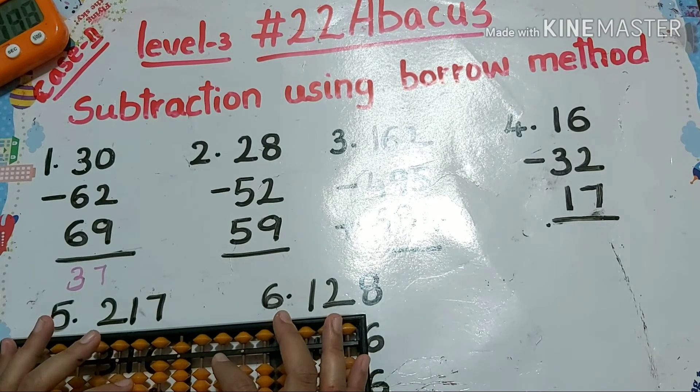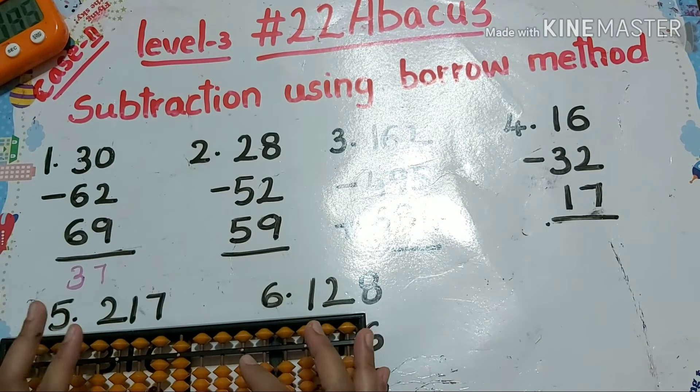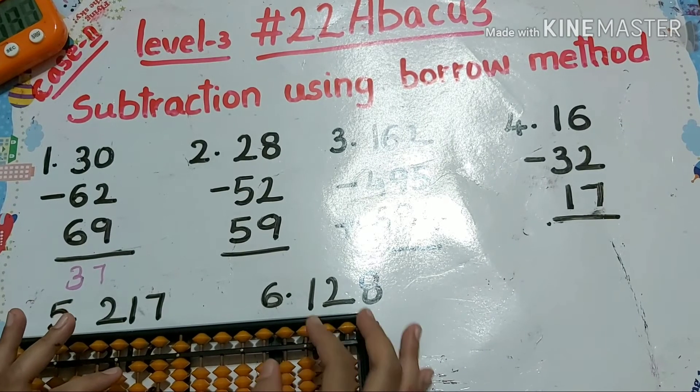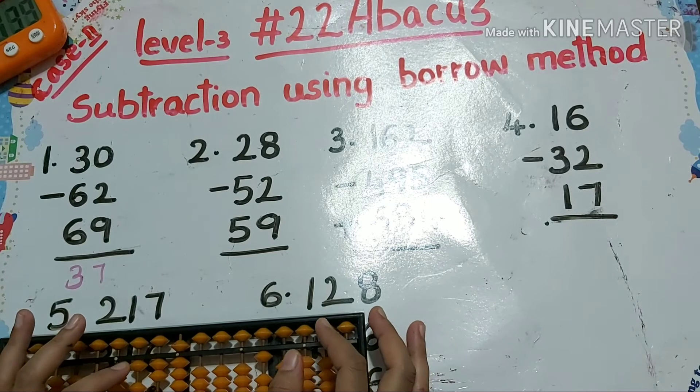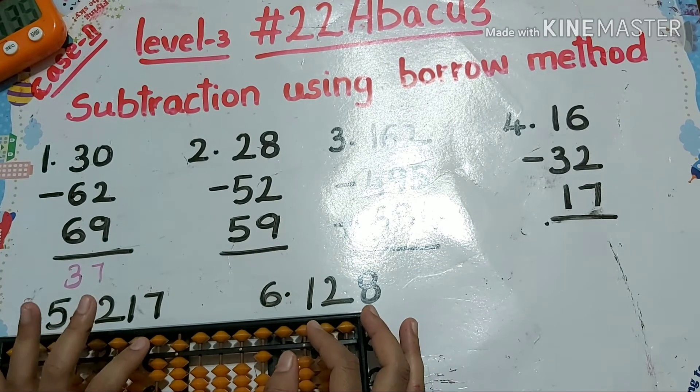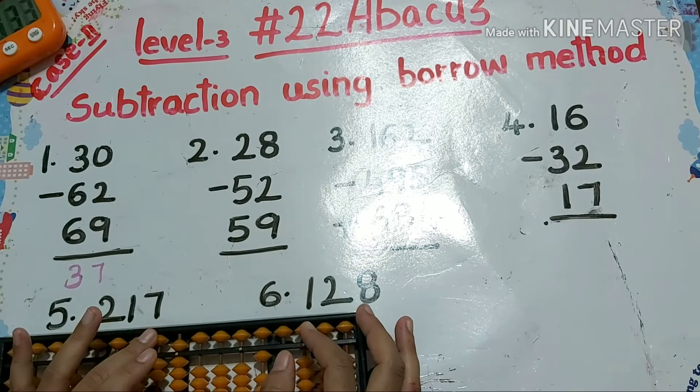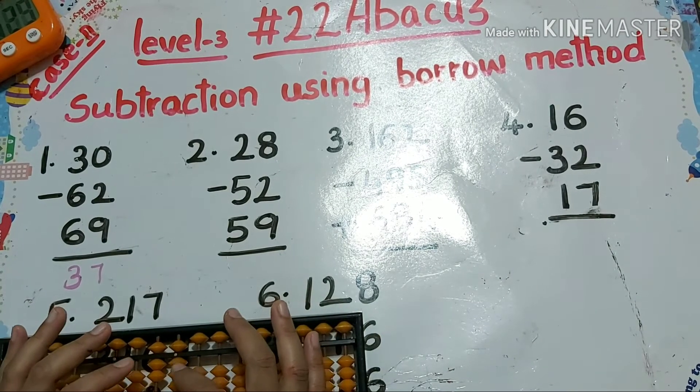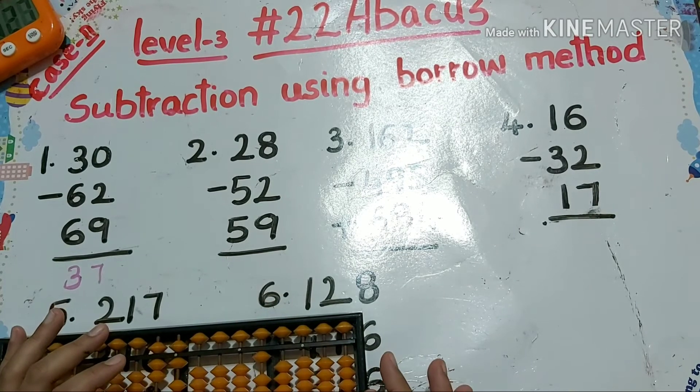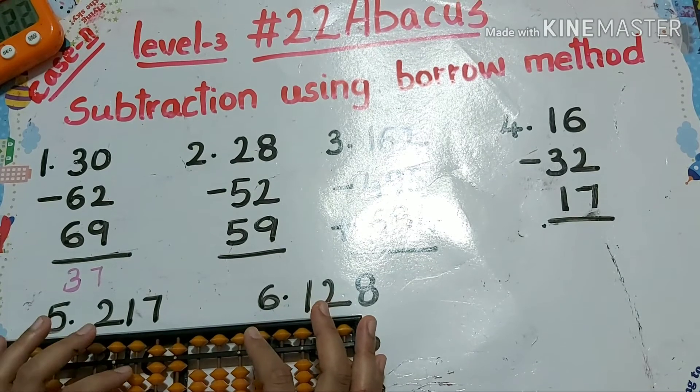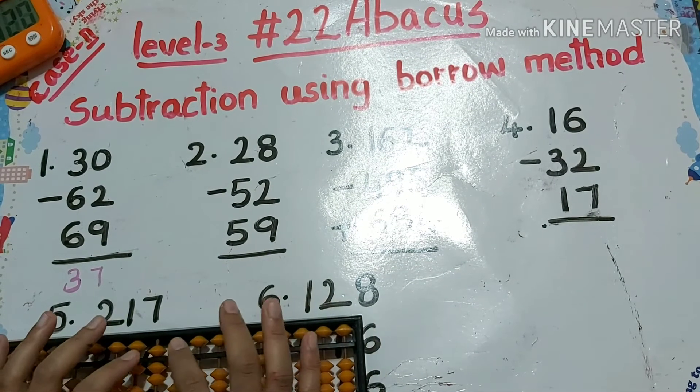28 minus 52. Minus five, so I'm taking borrow now, plus ten minus five. Next I have to do minus two directly. Next again plus five, so plus ten minus five. Plus nine: plus ten minus one.